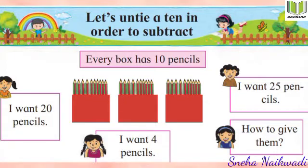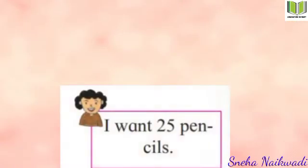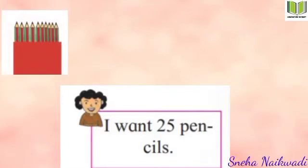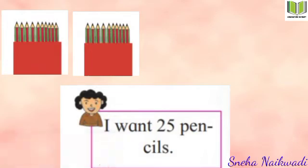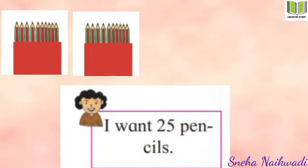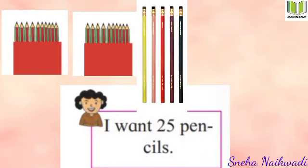Now the boy is saying he wants 25 pencils. How will he get 25? He will take one bundle of 10 pencils and another bundle of 10 pencils — that gives him 20. For the remaining five pencils, he will untie one more bundle of 10 and collect five pencils from those. So he gets 25 pencils total.